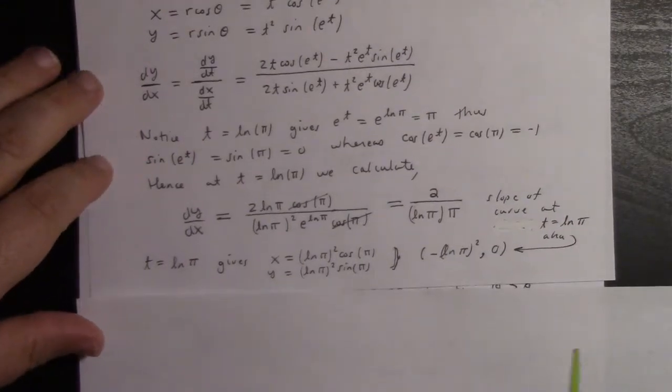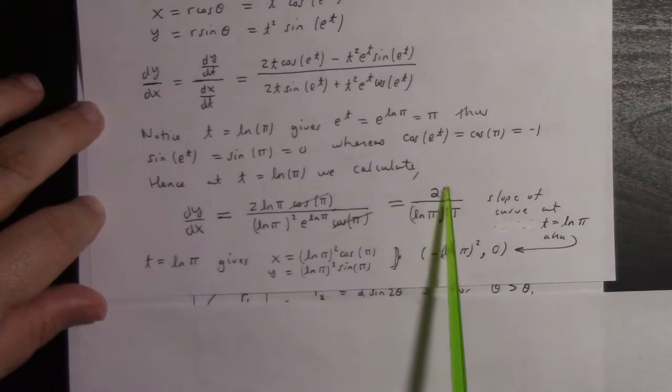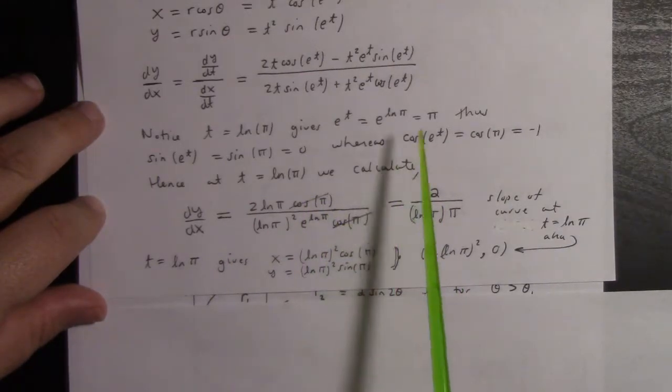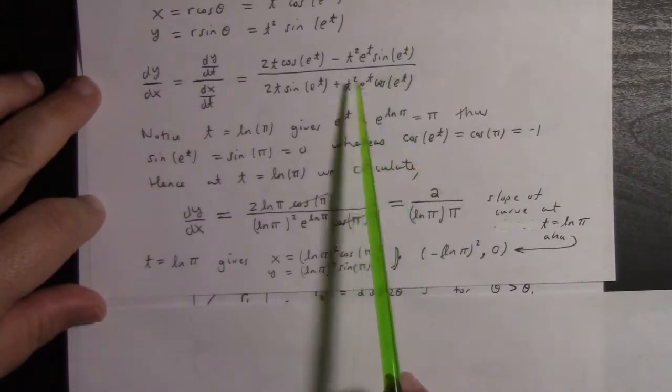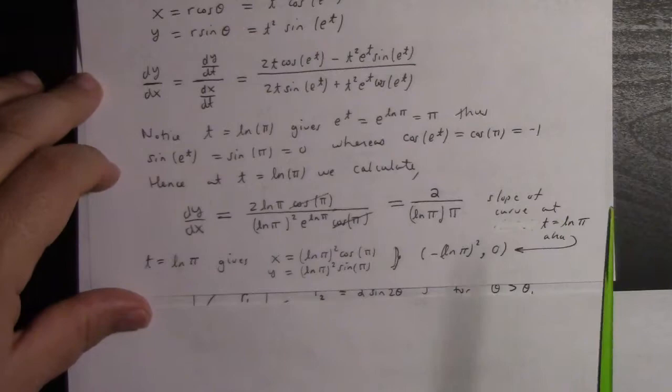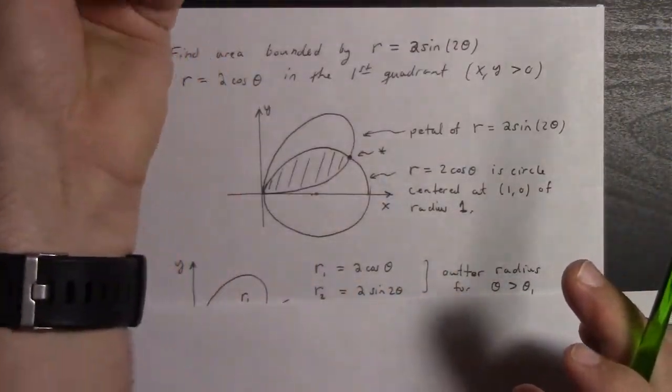Therefore, at t = ln(π), we can calculate that dy/dx is actually 2/(ln(π)) times π, because the cos(π) terms cancel. And these sines were zero, so they didn't appear. So we have a slope of 2π/ln(π) at the point (-ln²(π), 0). That's kind of neat.